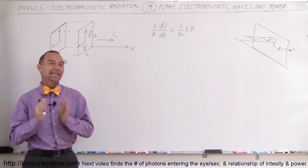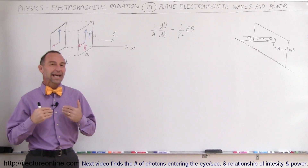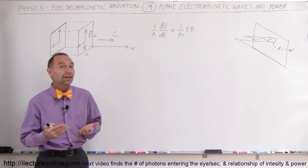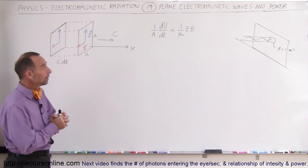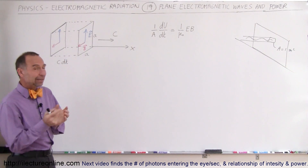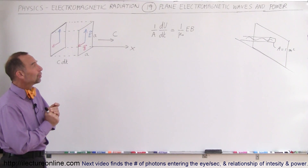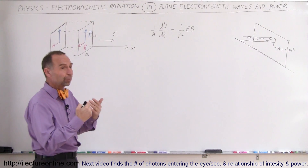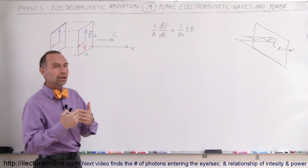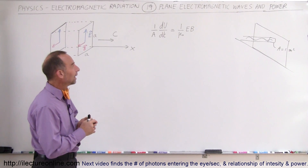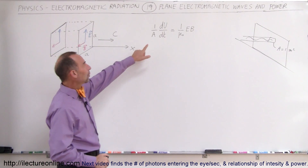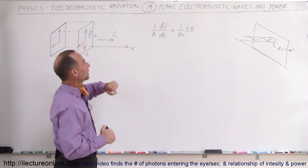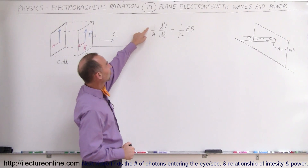Welcome to ElectronLine. Here we're going to take a look at the power deposited by sunlight or by any electromagnetic radiation. Sunlight is a good example. If we remember from the previous video, the energy deposited per unit time — which is power, joules per second, or watts — per unit area, this is how we describe the amount of energy deposited by electromagnetic radiation.